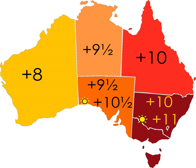The standardisation of time in Australia began in 1892, when surveyors from the six colonies in Australia met in Melbourne for the Intercolonial Conference of Surveyors. The delegates accepted the recommendation of the 1884 International Meridian Conference to adopt Greenwich Mean Time as the basis for Standard Time. The colonies enacted time zone legislation, which took effect in February 1895.